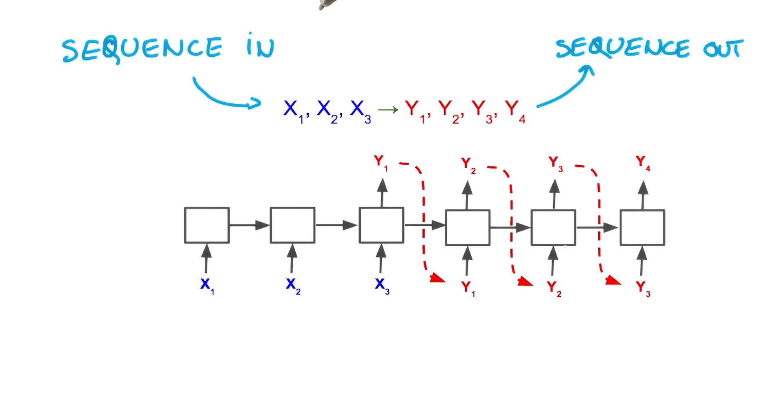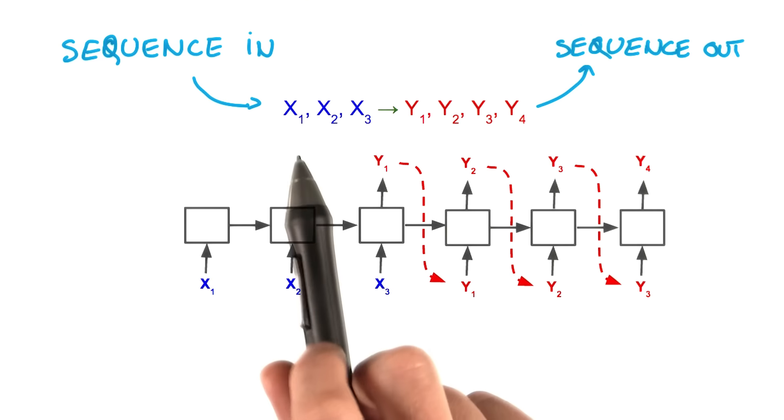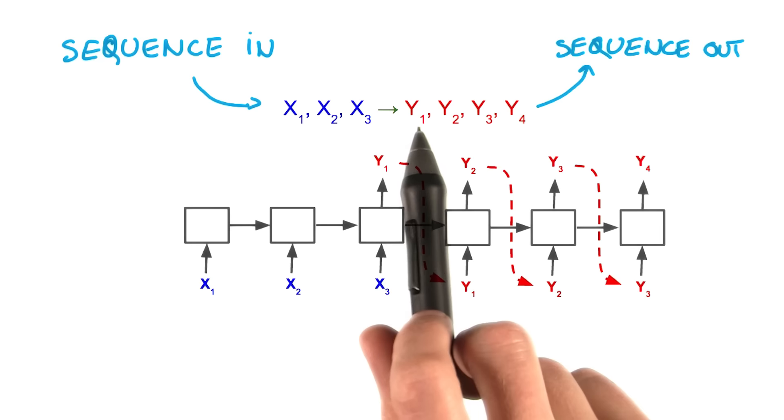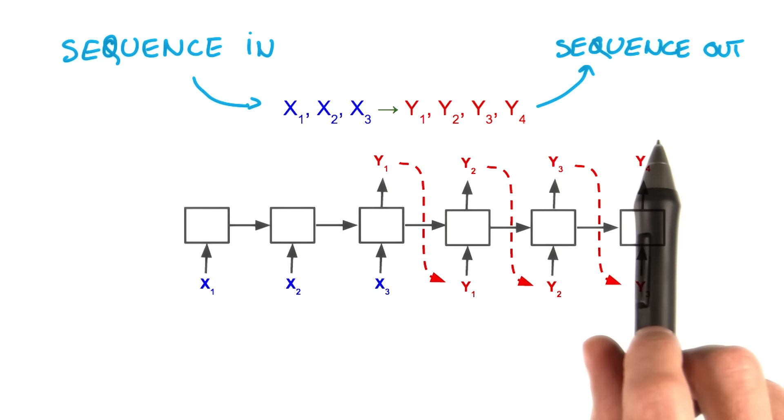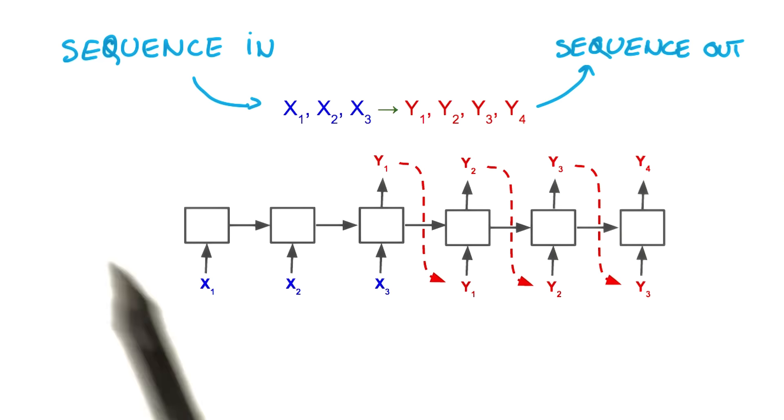Now you have those two building blocks, and you can stitch them together. It gives you a new model that maps sequences of arbitrary length to other sequences of arbitrary length, and it's fully trainable.